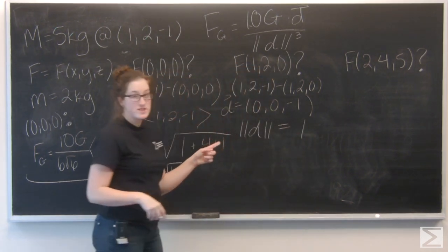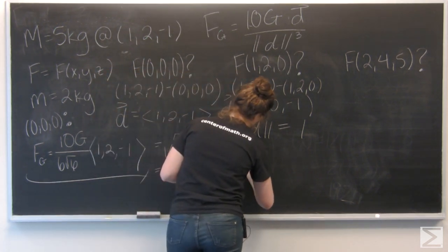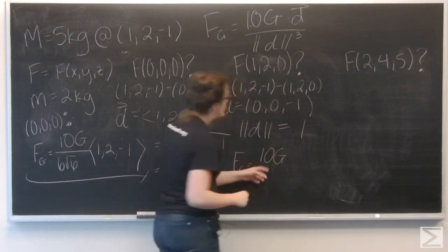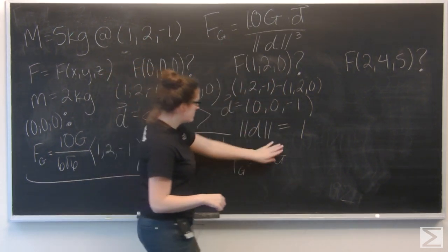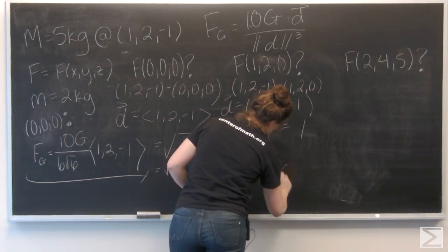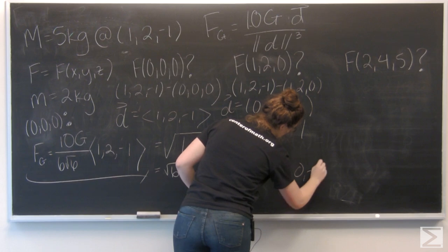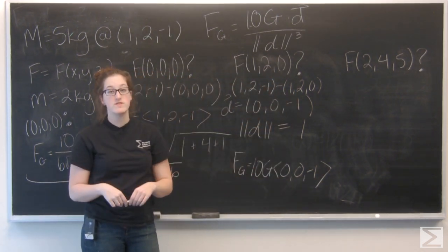So let's go ahead and plug these things in. So I have 10G divided by, this time it's only 1, times that vector. So I have 10G times the vector (0, 0, -1).